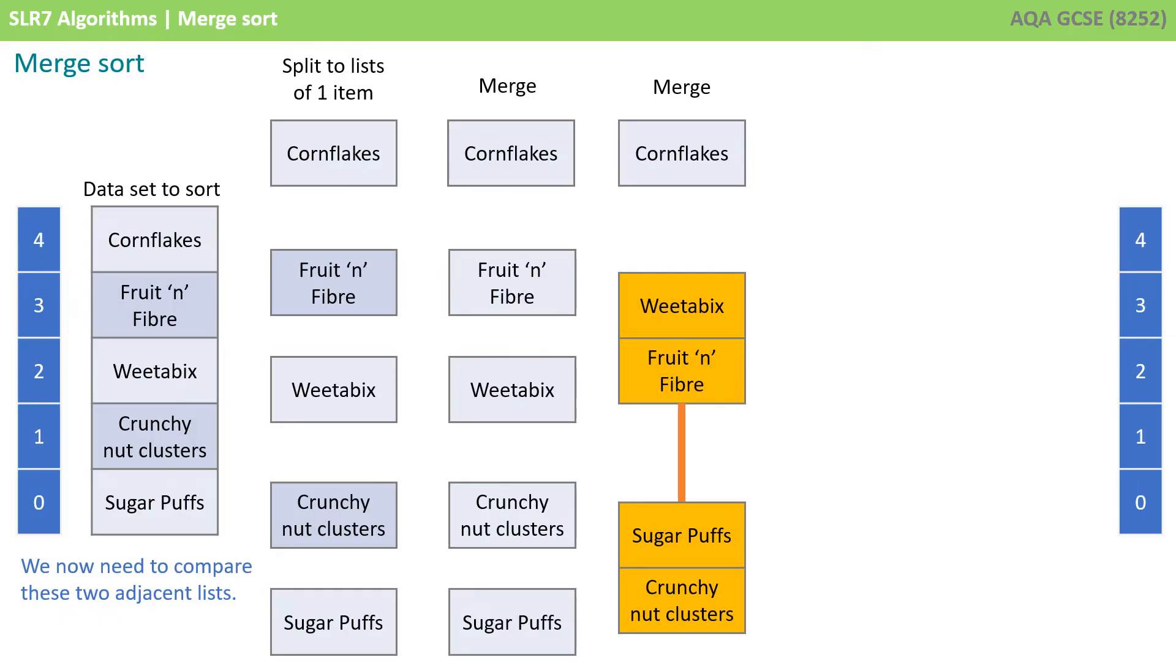We repeat the algorithm, and we now need to compare these two adjacent lists, which were merged from the previous single item lists. We compare the first item in the first list with the first item in the second list.